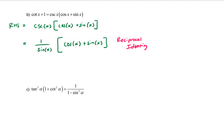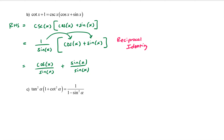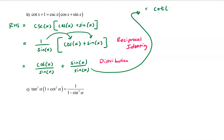Next, I'm going to distribute 1 over sine of x into the bracket. That gives us cosine of x over sine of x plus sine of x over sine of x — using distribution. Then cosine of x over sine of x equals cotangent of x by a reciprocal identity, and sine of x over sine of x equals 1. So we get cotangent of x plus 1, which equals the left-hand side — proof complete.